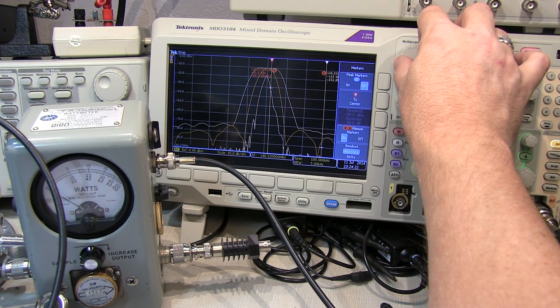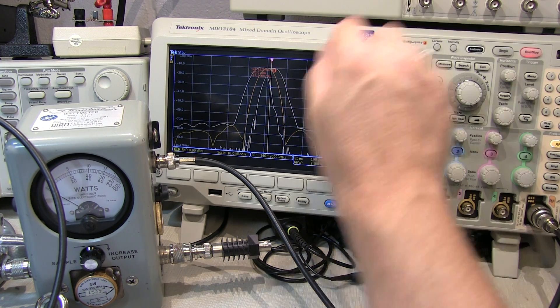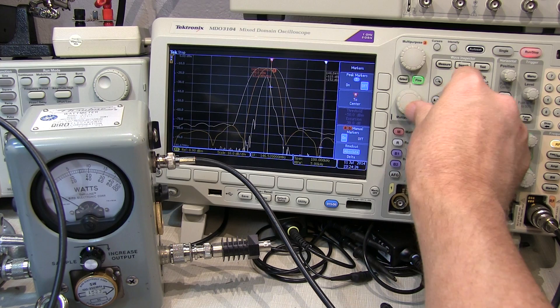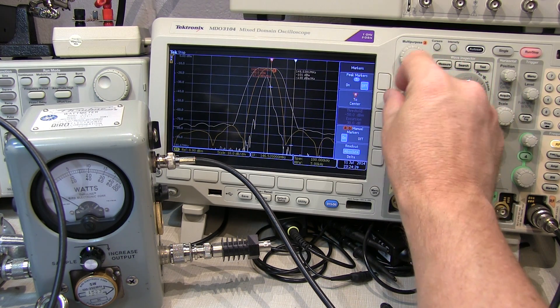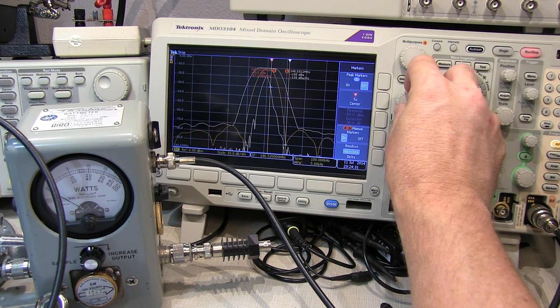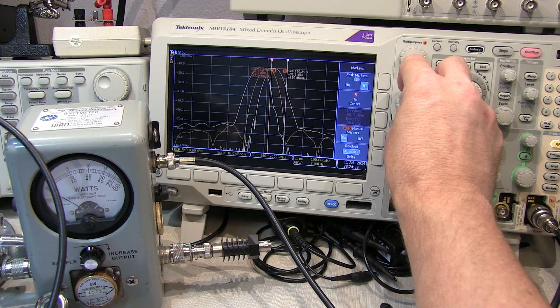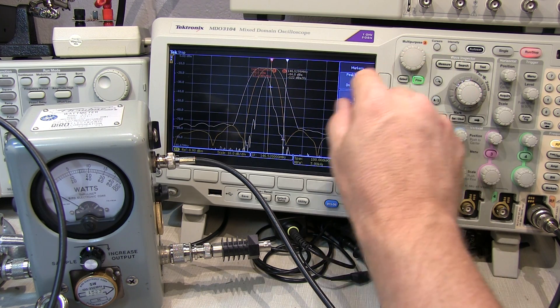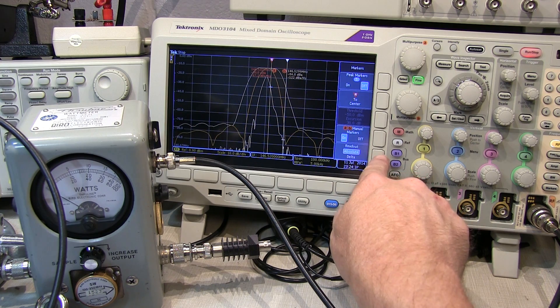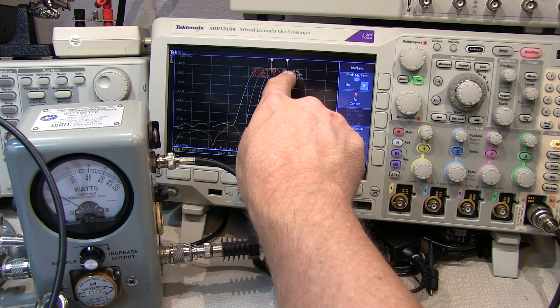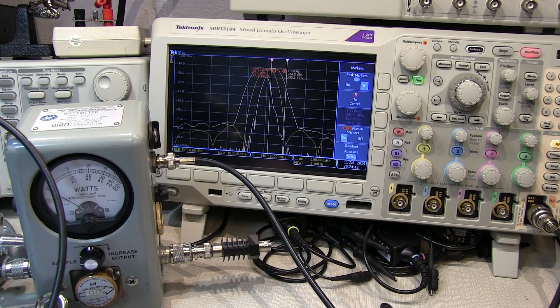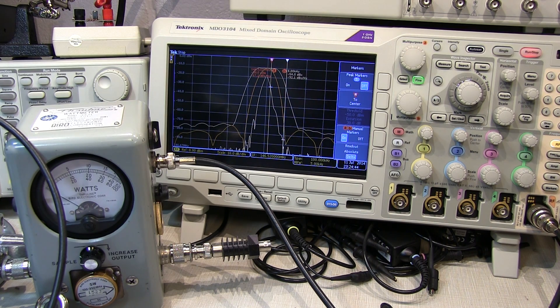Now we'll move the other marker over till the max hold trace is crossing that same graticle, and it looks like that's right about there. Let's set the markers to read delta, and I see I'm reading four kilohertz.